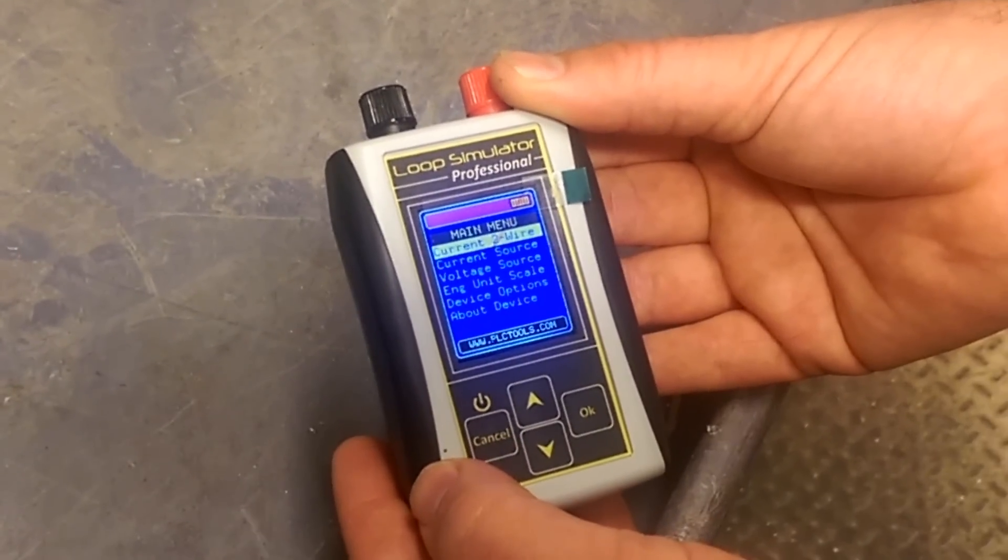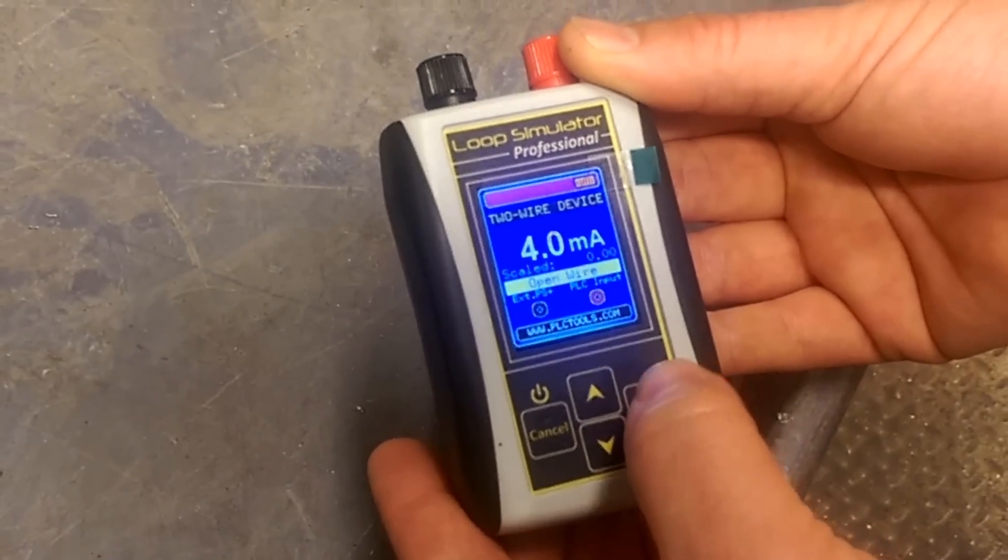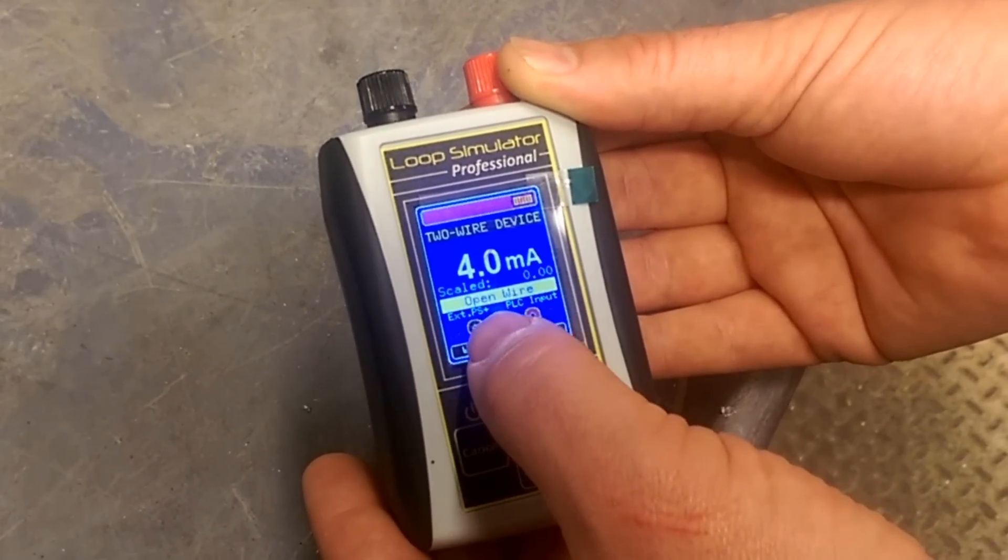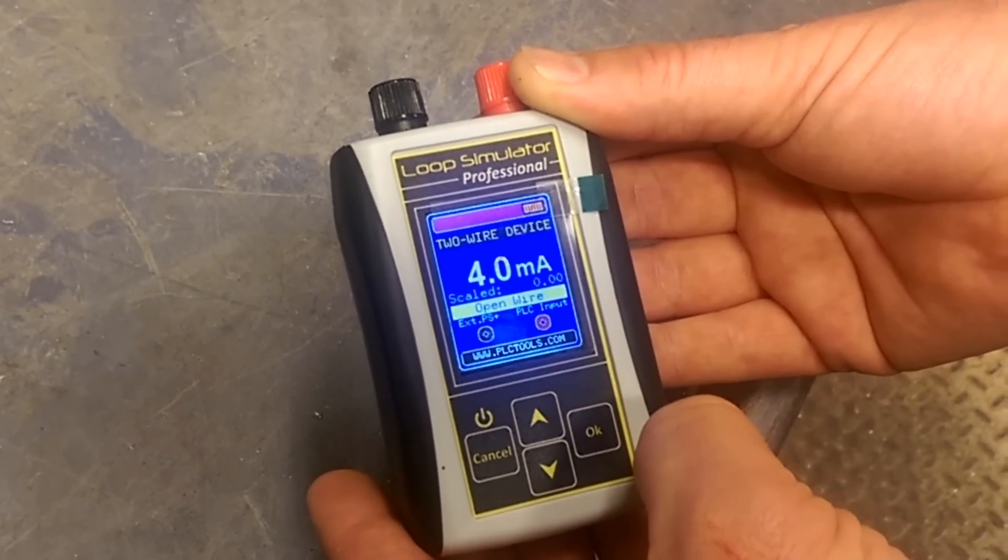To start, we'll turn on our analog simulator and select our mode, which is going to be current two wire. It tells us we'll need an external power supply with the plus going to the black terminal, and the red terminal will go to our PLC input.